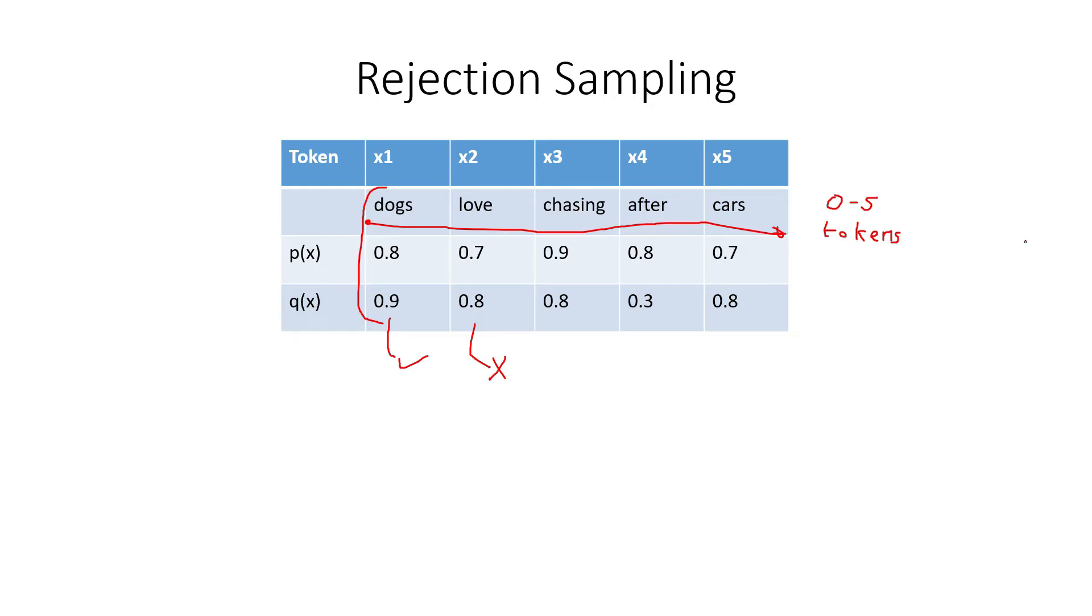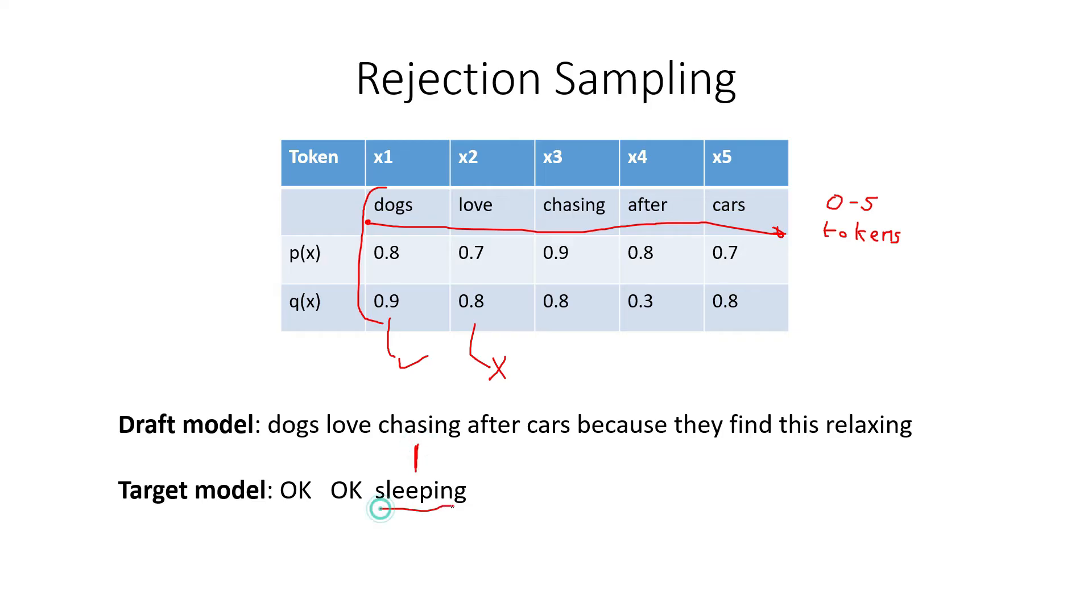So imagine if a draft model generates a bunch of interesting words, and then the target model starts checking each of the words one by one. So the first word is okay, the second word is okay. But the third word, it disagrees with the draft model and it thinks a different word should have been chosen instead. But at this point, the paths have diverged and we don't really know what should come next. Because all of these words that the draft model have generated assumed this word was correct. And if it's not, then they're no longer relevant and they have to be discarded. And that's why we run the loop to accept, accept, accept. And then when the first rejection happens, then we have to break out of the loop.